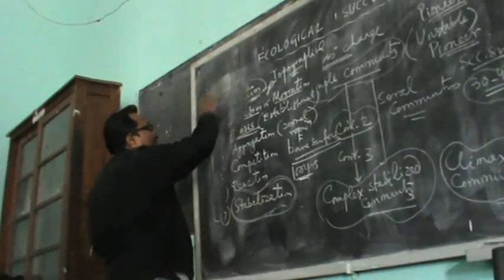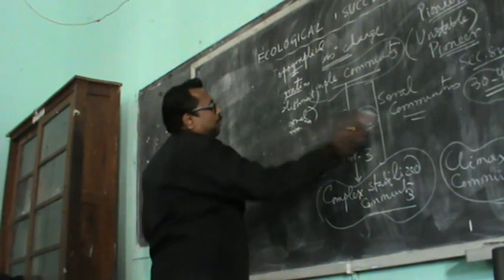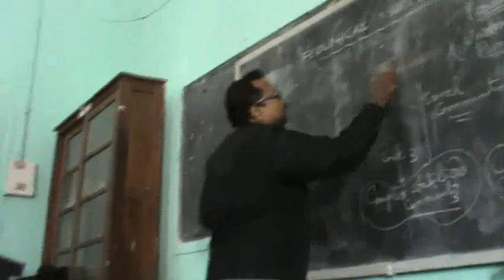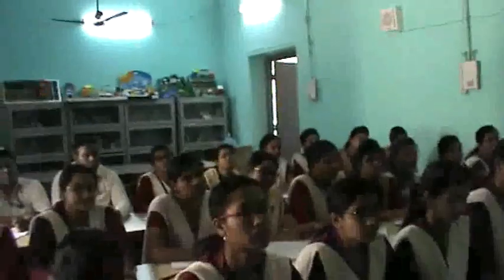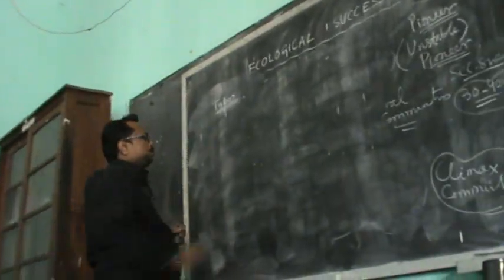So we concentrate on both these successions: one which starts on a water surface, and one that starts on a bare, dry, terrestrial surface. On the basis of that, two types of succession occur, based on the habitat or the surface area on which succession proceeds.